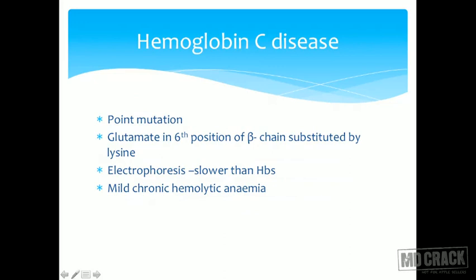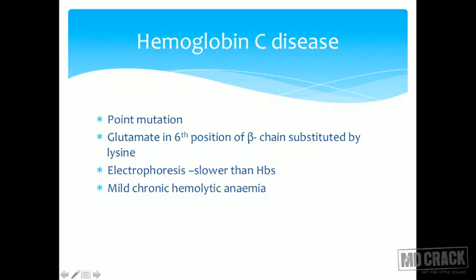Another hemoglobinopathy is HbC disease, which also involves a point mutation. Here, glutamate at the sixth position is substituted by lysine. In electrophoresis, HbC moves slower than HbS and leads to mild chronic hemolytic anemia.